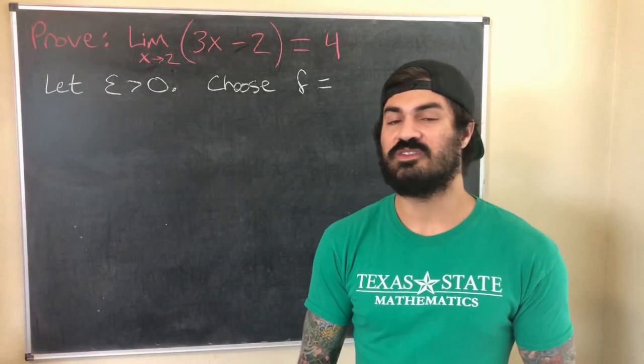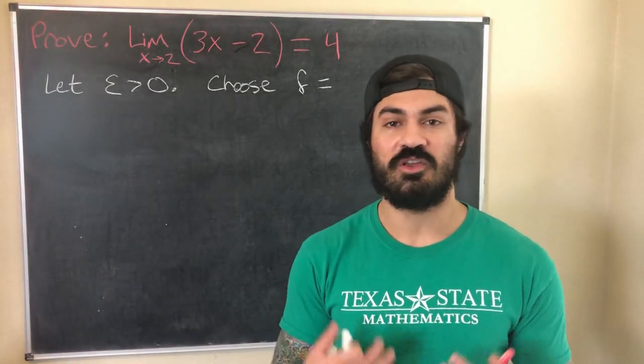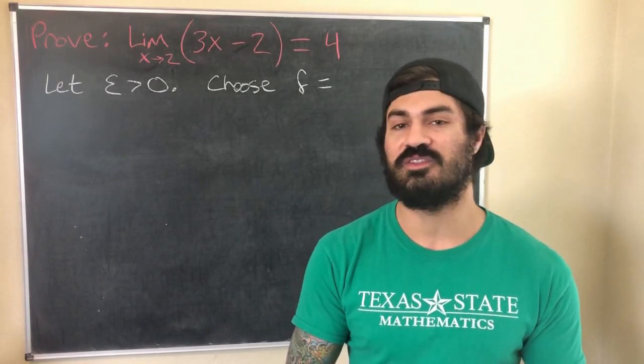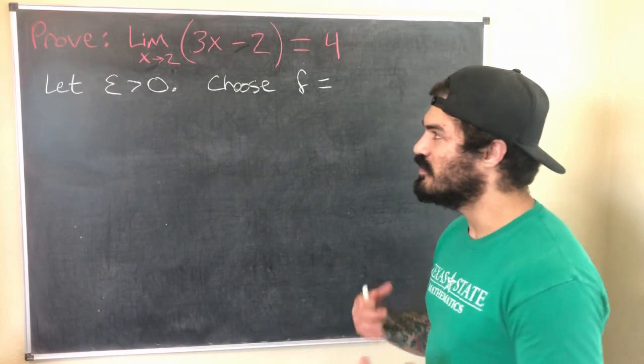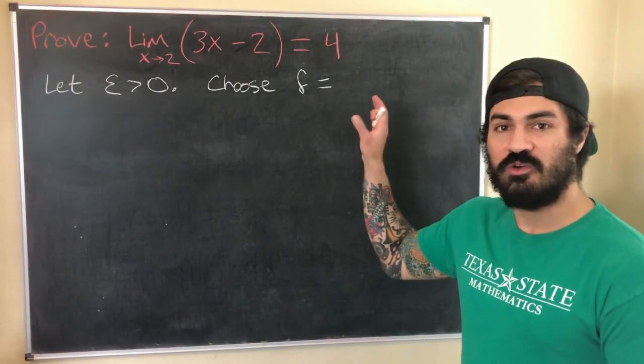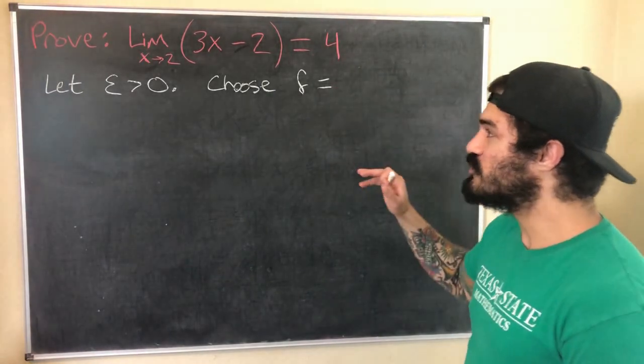I sort of explain that in my other video where I draw a picture. But the way I sort of think of this is you give me an epsilon and I'll give you a delta, and for any epsilon you give me I can give you a delta that works. That's sort of how I think of it informally.